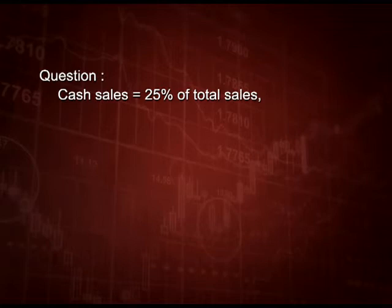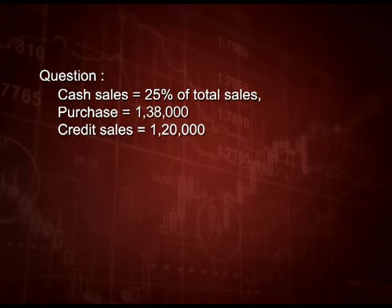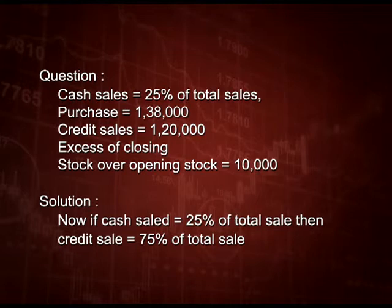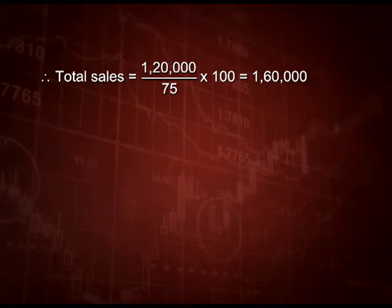Another variation of GP ratio: cash sale is 25 percent of total sale, purchase is 1,38,000, credit sale is 1,20,000, and excess of closing stock over opening stock is 10,000. If cash sale is 25 percent of total sale, then credit sale is 75 percent of total sale. Using the unitary method — 1,20,000 divided by 75 into 100 — we get total sale of 1,60,000. So cash sale is 40,000 and credit sale is 1,20,000.